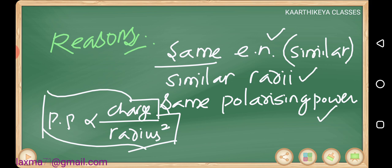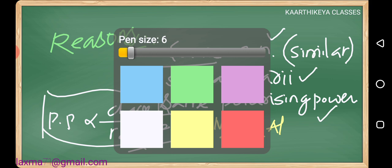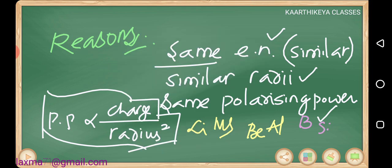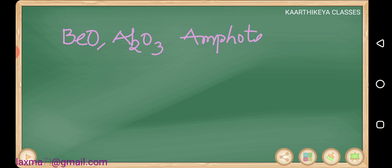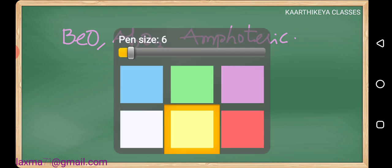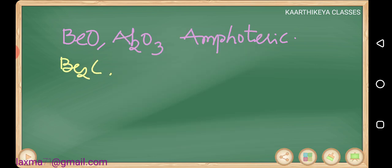Which elements show diagonal relationship? Lithium with magnesium, beryllium with aluminium, and boron with silicon — these are diagonally related. For example, beryllium oxide and aluminium oxide are both amphoteric. Beryllium carbide and aluminium carbide on hydrolysis both produce methane.